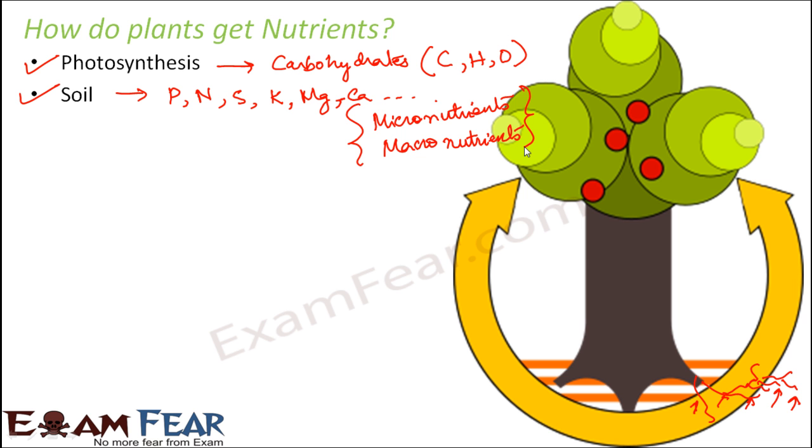Third is nitrogen-fixing bacteria. How do these bacteria help plants? Nitrogen is a macronutrient for plants. Nitrogen doesn't exist in soil naturally. Where is nitrogen present naturally? A lot of nitrogen is present in gaseous form in the air. If you look at the composition of air in the atmosphere, the air contains 78 percent nitrogen.